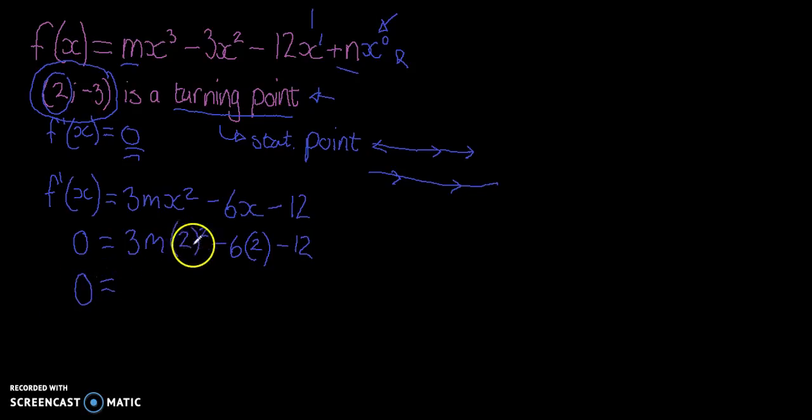So let's see what we can do. 2 squared is going to be 4, 4 times 3 is 12, so that's 12m. And then minus 6 times 2 is going to be minus 12. Then minus 12 again.